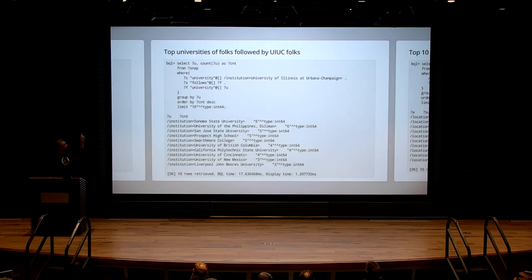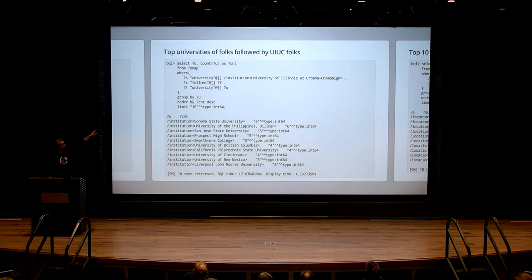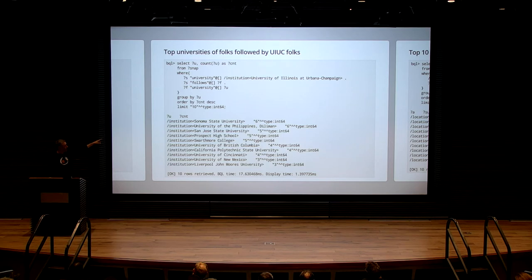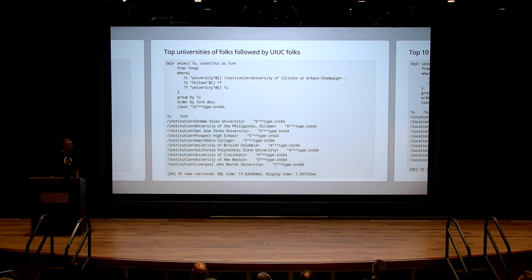Another example: top universities of folks followed by UIUC fellows. I start with University of Illinois (U of I), get all the members in the graph belonging to that university, get all their followers, then get all those followers' universities — count, sort, and group. You get Sonoma State University as the most popular in that dataset for UI students.